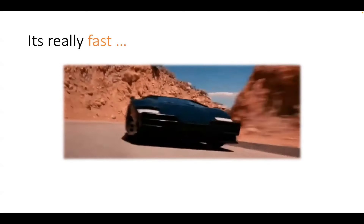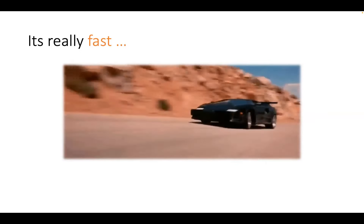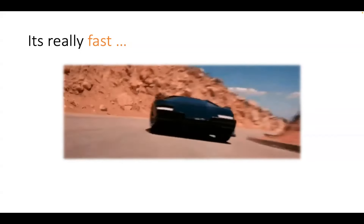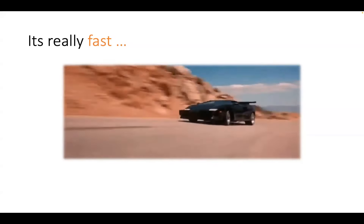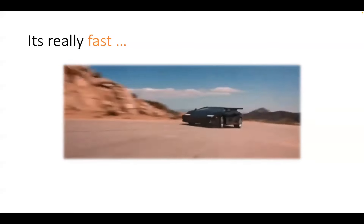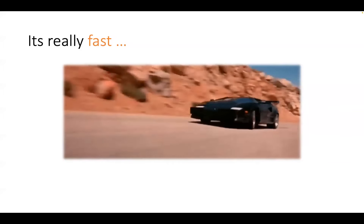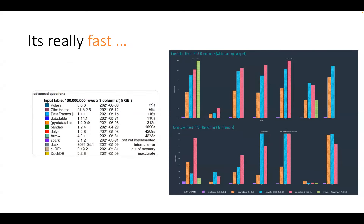The first thing that comes to mind when we think about Polars is it's fast. We'll try to learn why it is fast and how we can quantify this, because performance is always relative. Rather than me showing you how fast this is with respect to other libraries, it's always good to try it on your own dataset. Just a few stats pulled from the website — there's a TPC-H benchmark, typically used for sequential and random workloads for databases. This test was executed on more than 10 million rows and nine columns, roughly around 5 GB of data. Polars could do those operations in 59 seconds, whereas Pandas took almost 1,090 seconds.